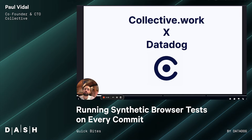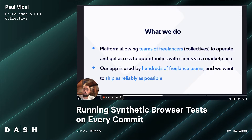Hello everyone. My name is Juan. I'm going to tell you how Collective.org uses Datadog to ship in a resilient manner every day and also to prevent bugs from arriving in production. First of all, what do we do at Collective.org? We're a platform allowing teams of freelancers, aka collectives, to operate and get access to opportunities with clients via a marketplace.